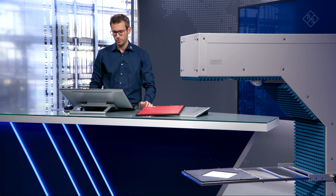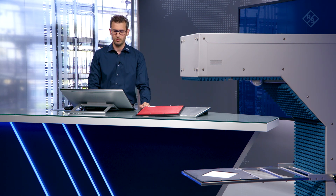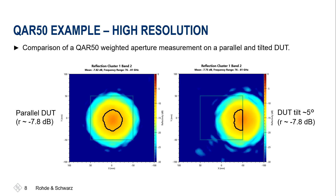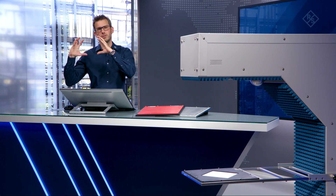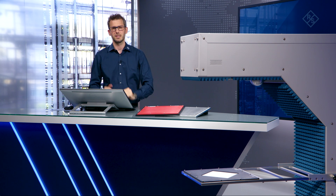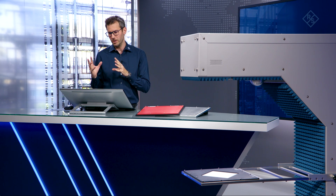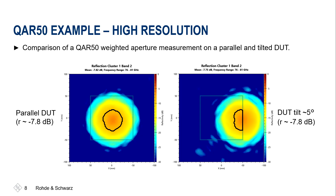We can see this with our measurement results shown here. On the left-hand side, you see the result of the perfectly flat, perfectly positioned plate — the measurement circle is in the middle and we get a reflectivity of about minus 7.82 dB for cluster one, band two — the 5 GHz band. On the right-hand side, the maximum of the reflection has shifted to the right, meaning the sample is tilted by about five degrees. However, looking at the result, we still have minus 7.8 dB reflectivity even though we tilted the sample by five degrees. As mentioned, the QAR50 gives you this feedback optically — you can see something is going wrong in the measurement before the actual measurement result goes off.